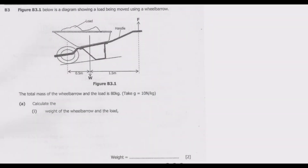Welcome viewers to the fourth episode in a series focused on the 2020 internal science paper — specifically physics. The first episode covered the paper in its entirety, the second looked at question B1, and now let us look at question B3. Figure B3.1 below is a diagram showing a load being moved using a wheelbarrow.